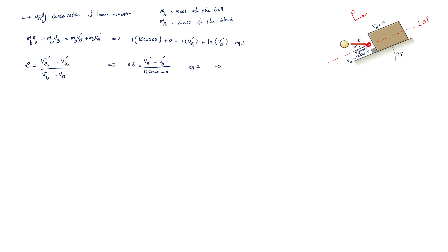By solving equation 1 and equation 2, the velocity of the block after the impact is 1.58 meters per second, and the velocity of the ball just after the impact is minus 4.95 meters per second. This means that when the impact happens and the ball strikes the block, the direction of the velocity changes — this is the value of the x-component.